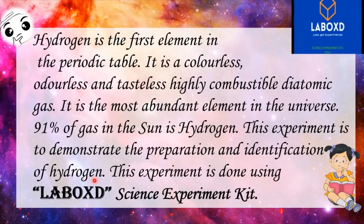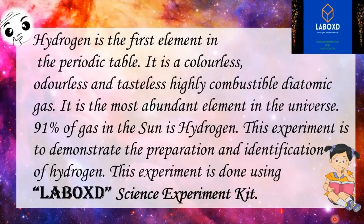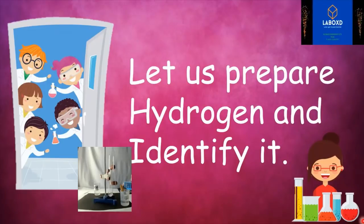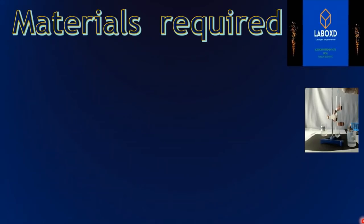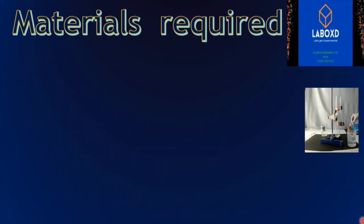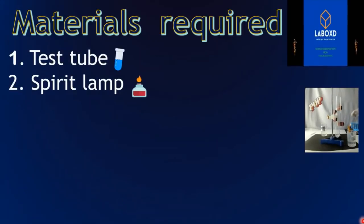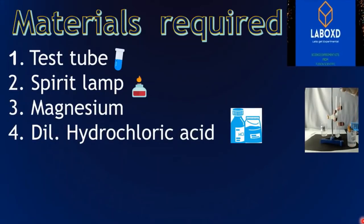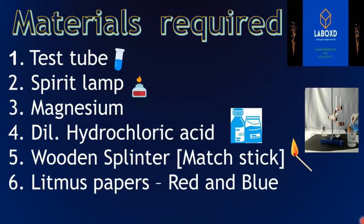This experiment is to demonstrate the preparation and identification of hydrogen, done using the science experiment kit. The materials required are: test tube, spirit lamp, magnesium, dilute hydrochloric acid, wooden splinter, matchstick, and litmus papers — red and blue.